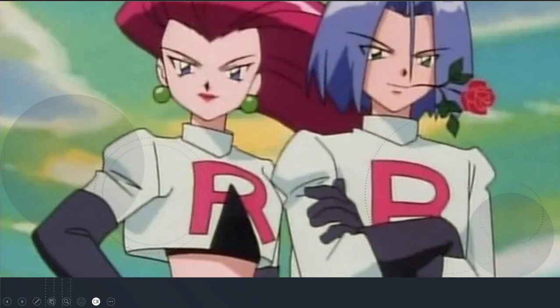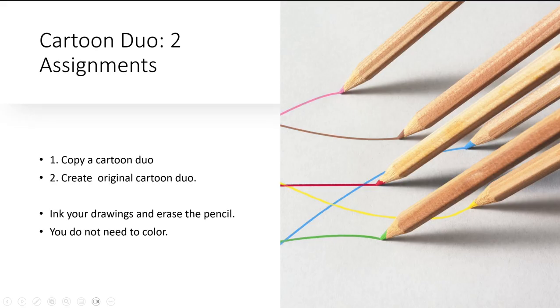Your second assignment: after completing those two drawings, design your own two original characters from the same story. Try to come up with a duo that complement or contrast with each other. Those familiar with Naruto — Naruto and Sasuke, orange and blue, complementary colors. Look at their hair, the way they act, but things that tie them together like sandals and headbands. Jesse and James — classic. Think about design, shape, outfit, color, personality, and motive when you create your duo. Ink your drawings and erase the pencil. You don't need to color, but you can. That's all for this lesson.